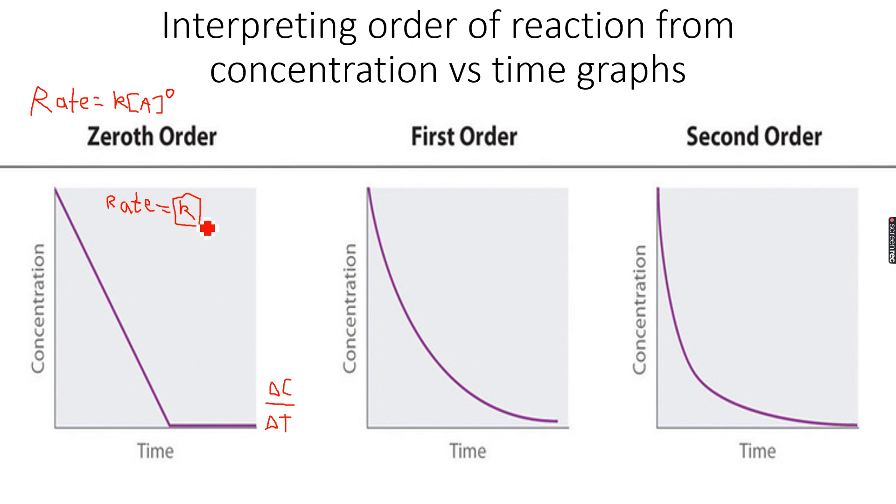And here from the equation, we can see that rate is equal to a constant and therefore the gradient is constant and hence we get a straight line. So for 0th order reactions, this is the concentration versus time graph.